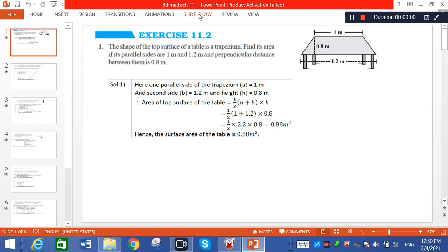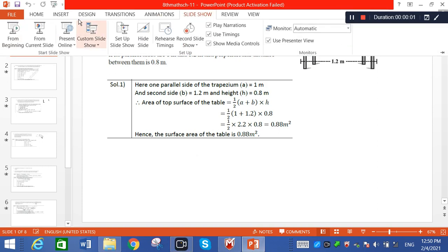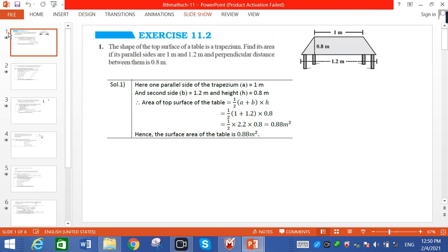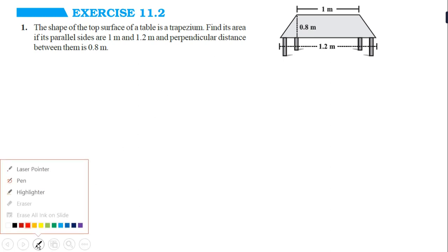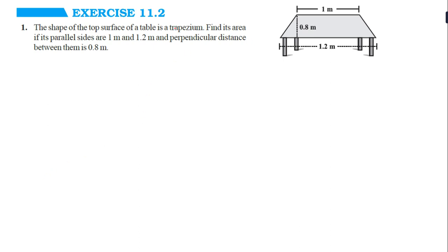In this lecture we have started Exercise 11.1. First, we have to understand the question: the shape of the top surface of a table is a trapezium. Find its area if its parallel sides are 1 meter and 1.2 meter.